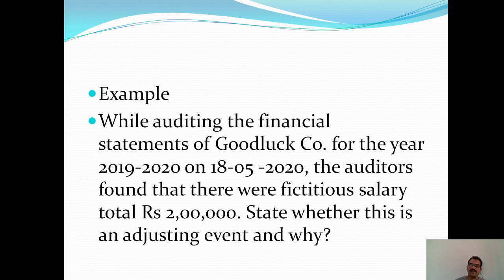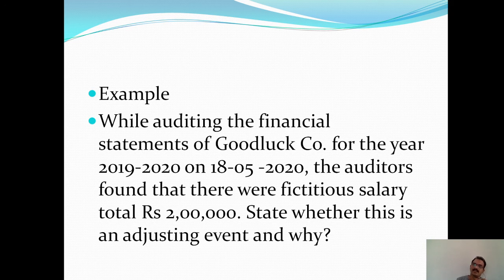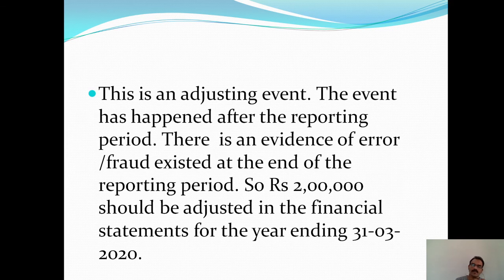For example, while auditing the financial statements of Good Luck Company for the year 2019-20, on 18th May 2020, the auditors found that there were fictitious salary payments totalling Rs. 2 lakhs. State whether this is an adjusting event and why. The auditors found fictitious salary of Rs. 2 lakhs during the audit.